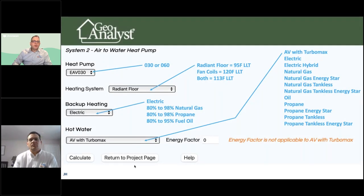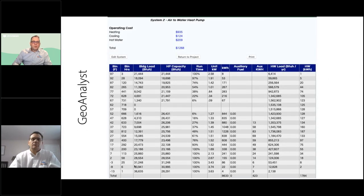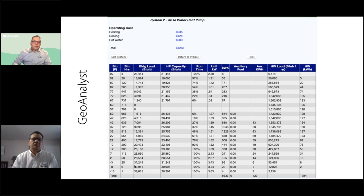This is a quick overview of the GeoAnalyst software. You can generate your own graphs — you'll have a choice of heat pump size, type of heating system (radiant floor, fan coils, or both), backup heating, and water heater. Through those choices you'll be able to create a nice report. The bin data is what's really most important. In Syracuse, for example, we only have one hour per year at minus 13°F on a 20-year typical weather average, and the bulk of the bin hours are in the 12°F to 47°F range.